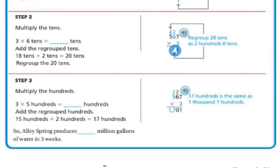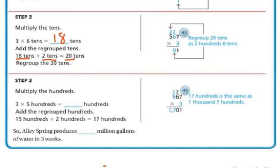Next, I'm going to multiply the tens. Three times six is 18. We have our 18 tens plus the two tens that were regrouped, giving us 20 tens. We regroup and put our two above and our zero down below. Step three: we multiply the hundreds. Three times five hundreds is fifteen hundreds, plus the two hundreds regrouped equals seventeen hundreds. So our answer is 1,701 million gallons of water in three weeks.